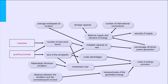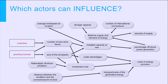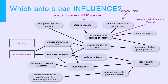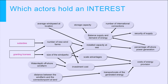Now we can ask our two questions. Looking at the balance on the net, clearly the network administrator Tenet is responsible here. The EU determines the number of international connections, while energy companies, power generators, and R&D agencies do research on energy storage. The energy companies are the main investors in wind power generation. Finally, the Ministry of Infrastructure and Environment is responsible for planning at sea, and thus determines the location, water depth, and distance to shore. So we have covered the influence part.